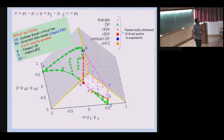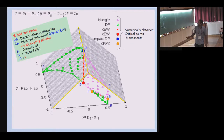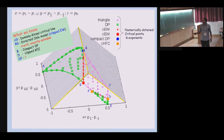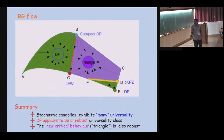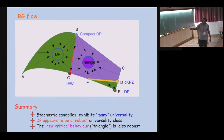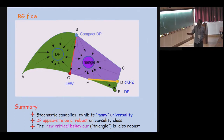It turns out there is a variety of critical behavior on that surface, studied numerically. One point corresponds to the Domany-Kinzel line; another is the Manna model or Oslo model; there is a very new universality class — Clift-KPZ — and another is conserved directed percolation. So a variety of universality classes emerge from this simple model. The conclusion is that stochastic sand piles exhibit many universality classes. Directed percolation appears to be the most robust universality class — because others are unstable and flow to DP. There is also a triangle which is a new fixed point not previously studied in self-organized or absorbing transition systems: Clift-KPZ and Clift–Edward-Wilkinson.